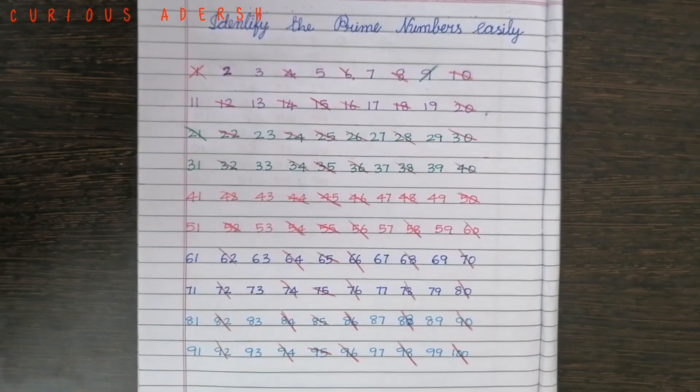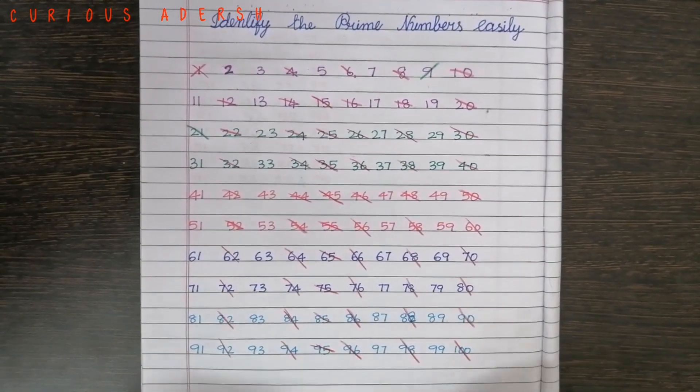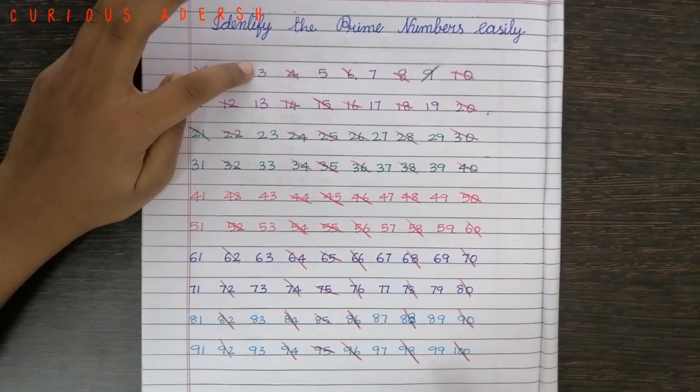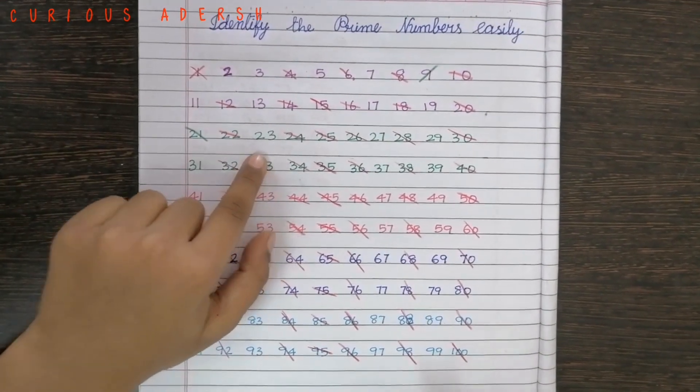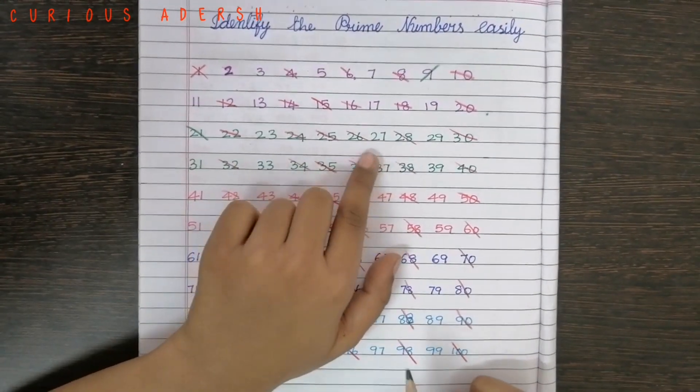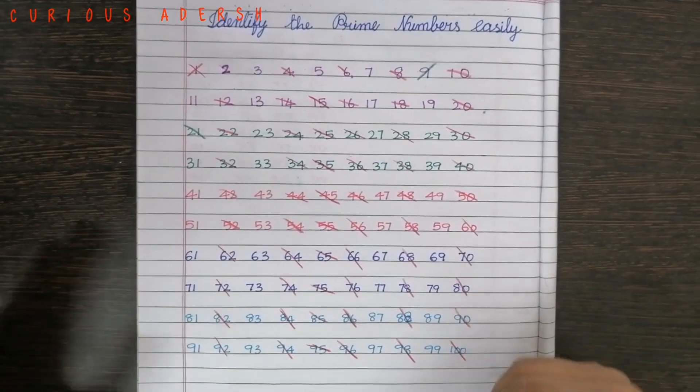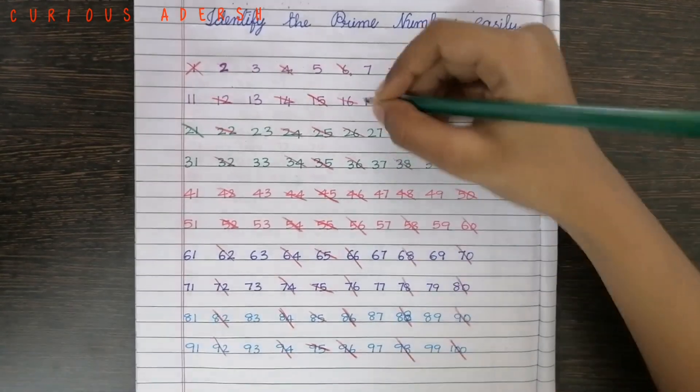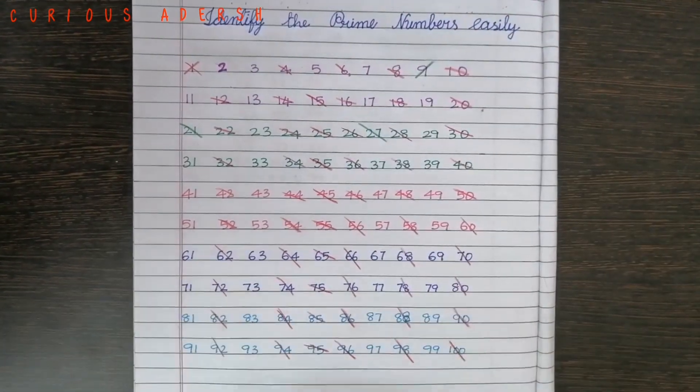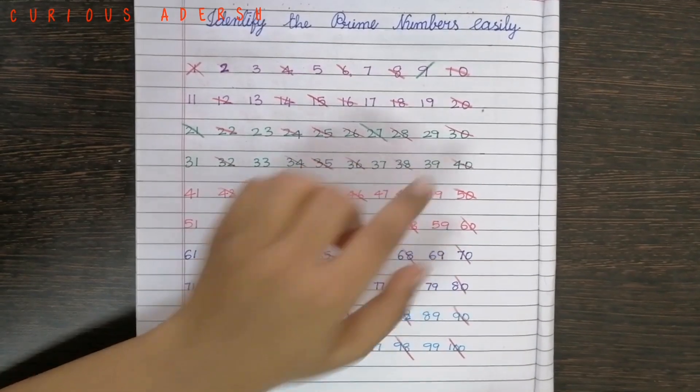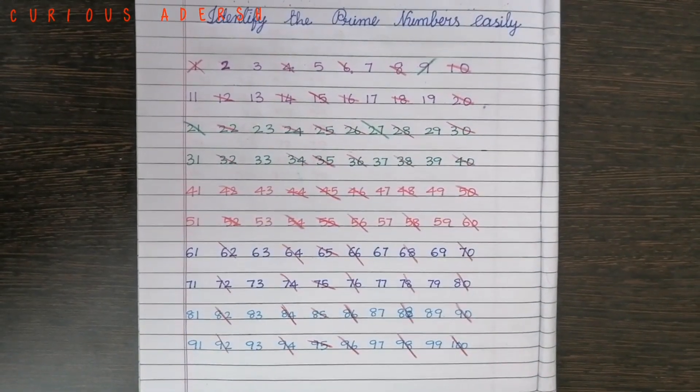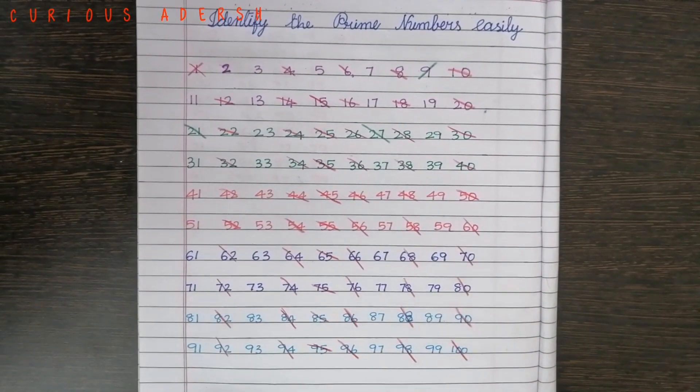Let's move to 23. 2 plus 3 is 5. 5 is not a multiple of 3. So we'll leave 23. Let's move to 27. 2 plus 7 is 9. 9 is a multiple of 3. So we'll cancel 27. Let's move to 29. 2 plus 9 is 11. 11 is not a multiple of 3. So we'll leave 29.